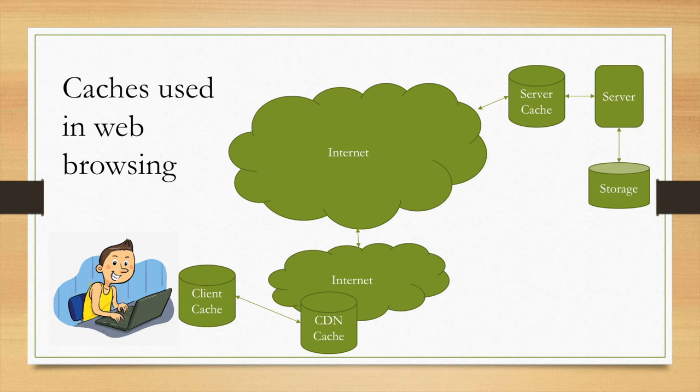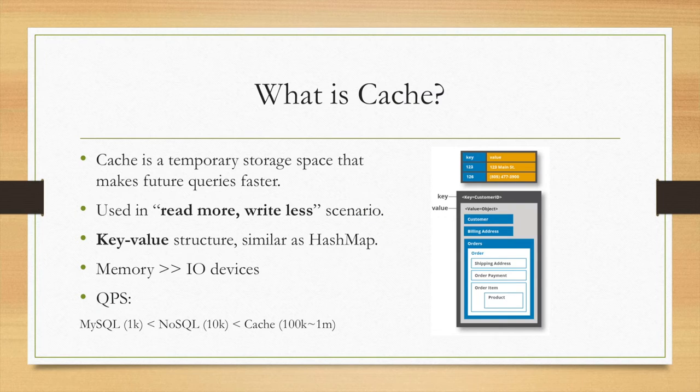On the server side it has a server cache. For each query or access we don't need every request that goes to the storage, but some of them will go to the server cache and that will speed up the speed. So from previous examples we know cache is a temporary storage space that makes future queries faster.